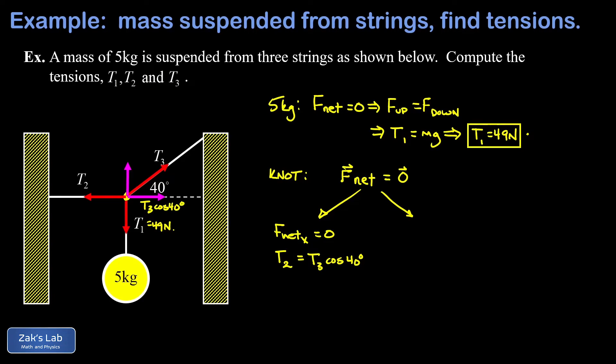So there's one equation relating these two unknowns T2 and T3. Then we look at the sum of forces in the y direction. F net in the y direction equals zero. In other words, all the upward forces have to add to the same thing as the downward forces.